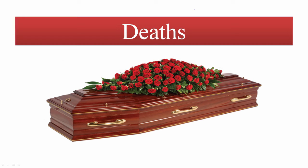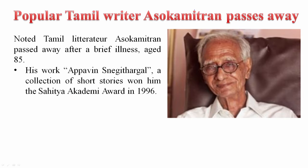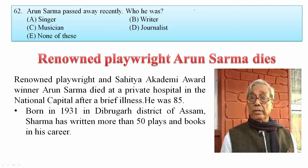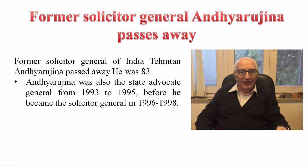In the deaths section: popular Tamil writer Ashokamitran passed away. Arun Sharma, an Academy Award recipient, passed away in a private hospital at the age of 85. Former Solicitor General Adhya Rajuna passed away — he was an advocate from 1993 to 1995 and Solicitor General from 1996 to 1998.